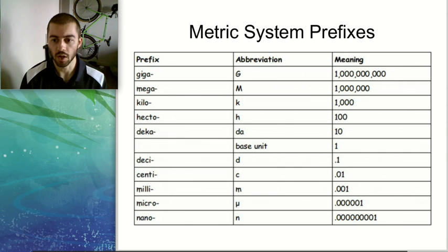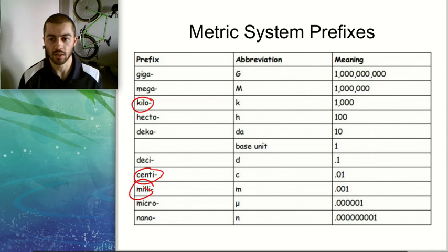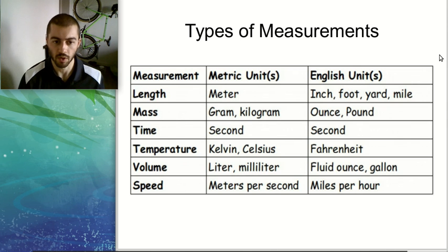All right, and the last thing we need to know about the metric system are prefixes. So we saw a few of these already like kilo and milli and centi. These are some of the more common ones that you'll see. So basically, all of these prefixes just go before whatever unit it is that we were talking about. So for example, meters, grams,